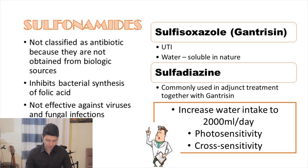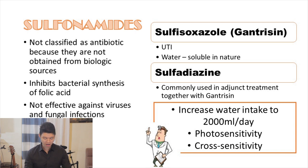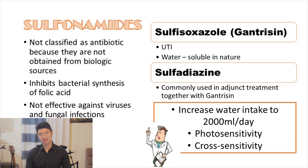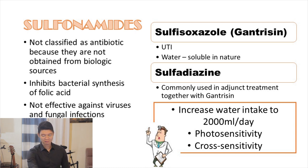TMP-SMZ is usually the drug of choice for treating pneumonia brought about by Pneumocystis carinii among patients diagnosed with AIDS. Common side effects include anorexia, rashes, nausea, vomiting, diarrhea, stomatitis, crystalluria, and photosensitivity. There are some topical forms, specifically mafenide acetate and silver sulfadiazine, which are effective for treating burns among clients.